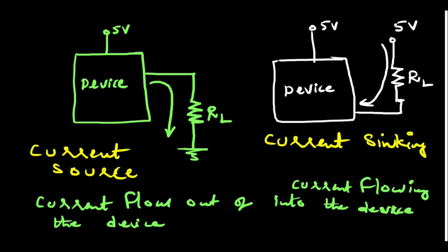Now I hope you got the basic idea about what is current sinking and sourcing. But if you want to be more familiar with this, let's take some more examples. Let's take a transistor.